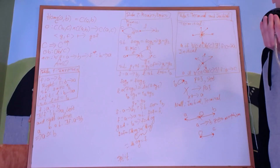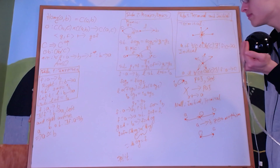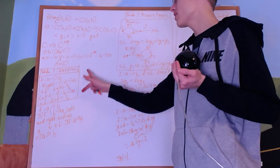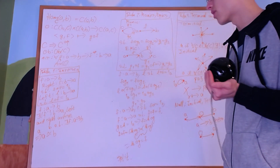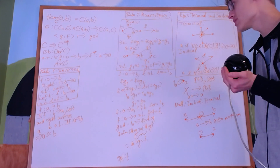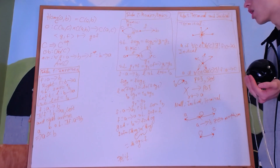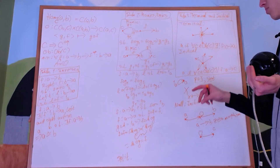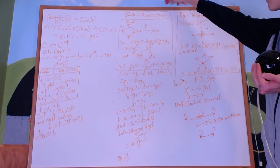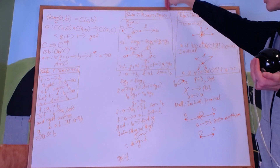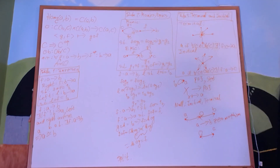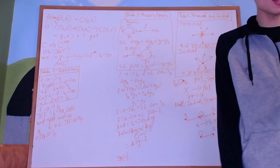The problem for today is to prove that the composition of invertible arrows, or isomorphisms, are invertible arrows and isomorphisms, and that the composition of monics or epics are monics or epics.